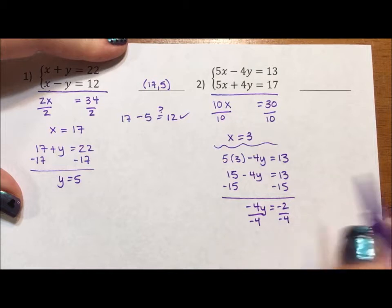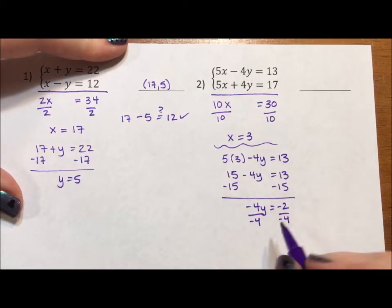Be careful. Negative 2 divided by negative 4—a lot of times people say 2 because I want big divided by small, but the big is in the denominator—so y is equal to 1 half.